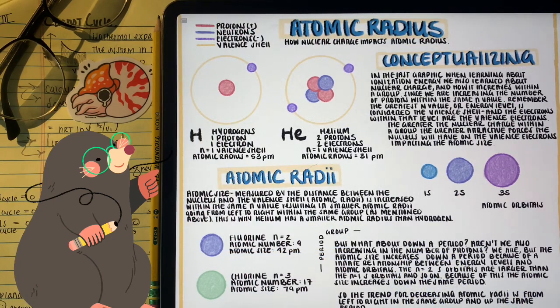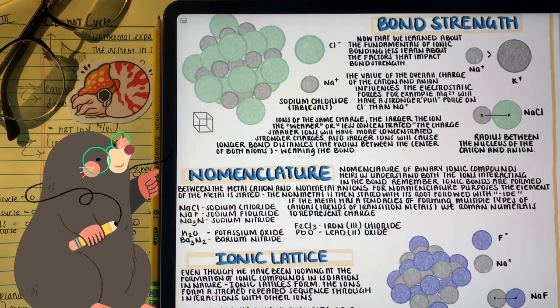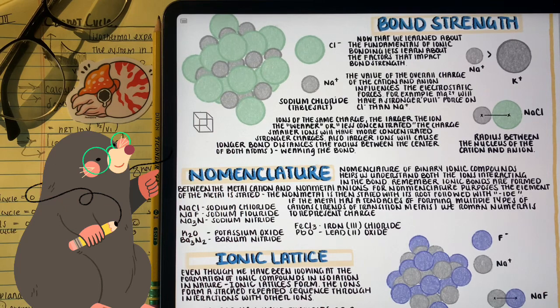The atomic size, as we saw in the last video, decreases as we go from left to right of the periodic table, and increases as we go down. The smaller the ions are, the more concentrated their permanent charge is. So, the smaller the two ions are, the stronger the ionic bond between them.